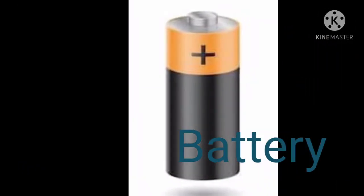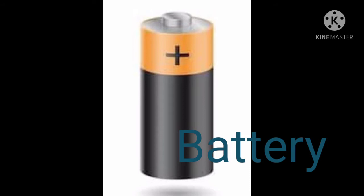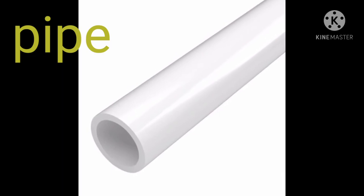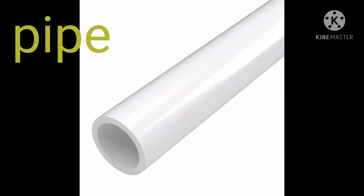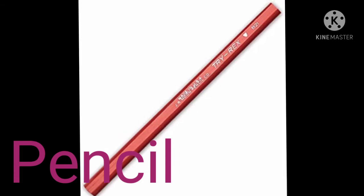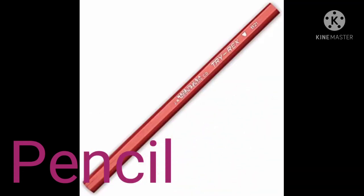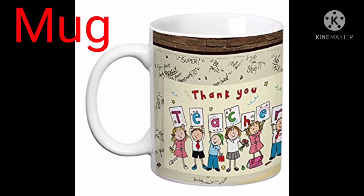Now see. What is this? This is a battery, or we can say pencil cell. So what is the shape of it? Cylinder. Now see — this is a pencil, and what is the shape of your pencil? It is also in cylinder shape. See, this is a mug, and its shape is also cylinder.